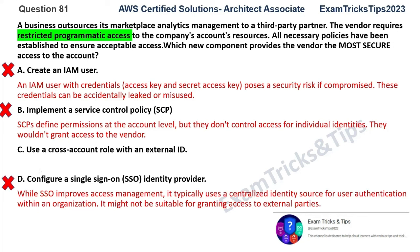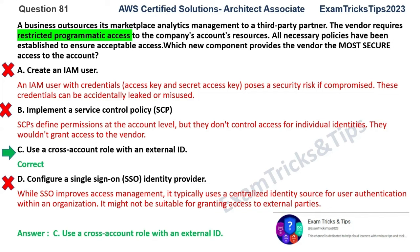What we are left with is option C: use a cross-account role with an external ID. From an identity question perspective, whenever you have to choose how to access certain resources, you should always go for anything that has a role, because you can define the role and attach policies to it. That's the most efficient way of providing access in AWS. So the answer for this question is option C.